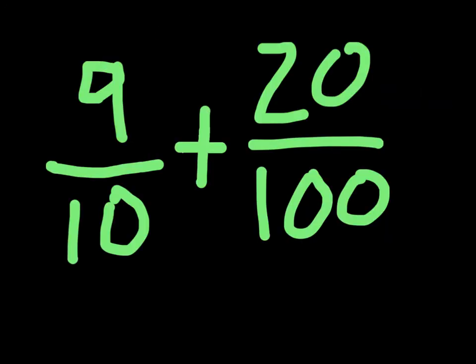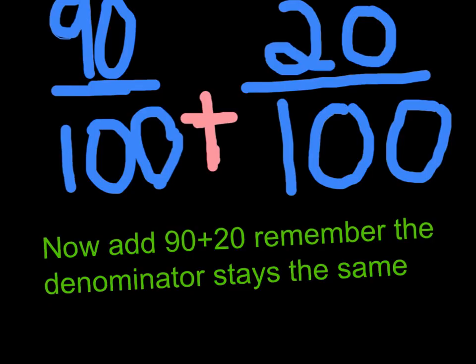Now let's try this. 9/10 plus 20/100. Remember, your denominators must be the same. Okay, y'all can learn a nice thing, so y'all can add it up. Now add up the numerators.